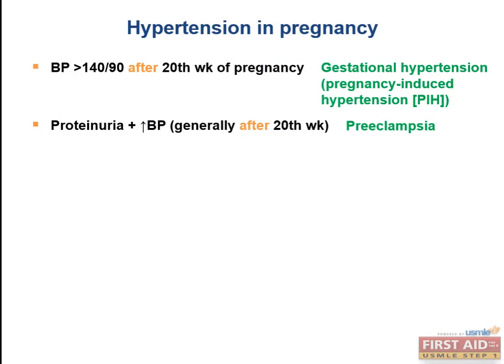On the USMLE, if they give you proteinuria plus increased blood pressure at week 15, think hydatidiform mole. After 20 weeks, think preeclampsia. Eclampsia is merely preeclampsia plus seizures. If they ask about treatment for seizures during pregnancy, the answer is magnesium. Proteinuria plus increased blood pressure plus seizures — magnesium is the best initial treatment, whereas the most definitive treatment would be delivery of the fetus.